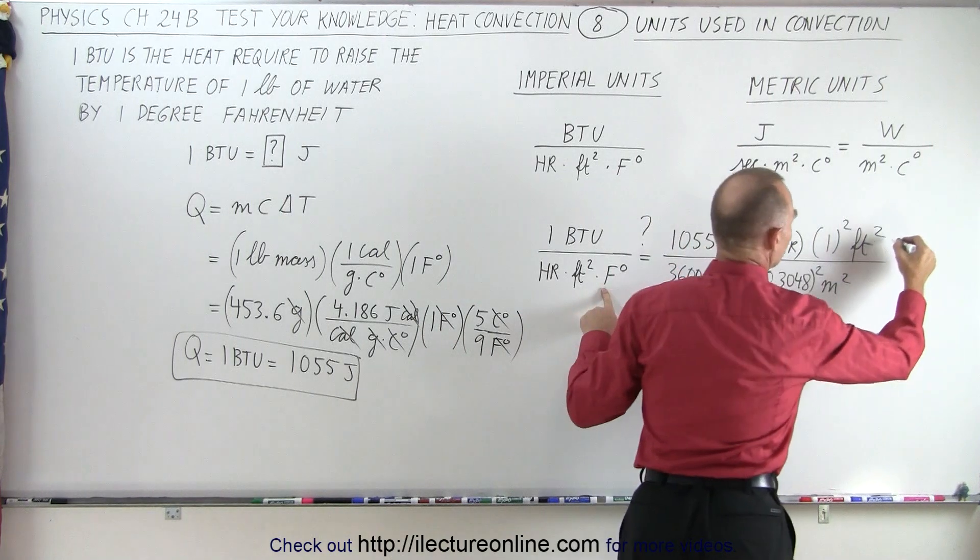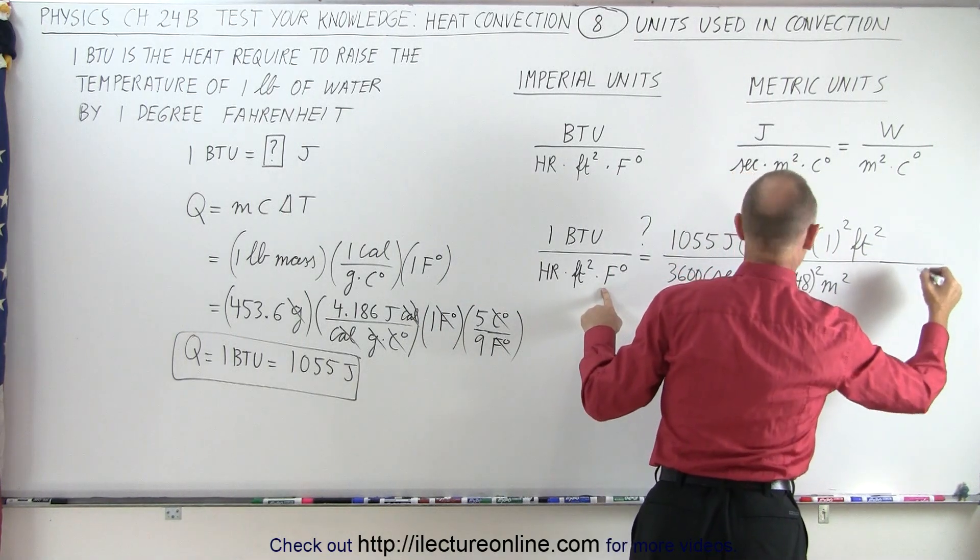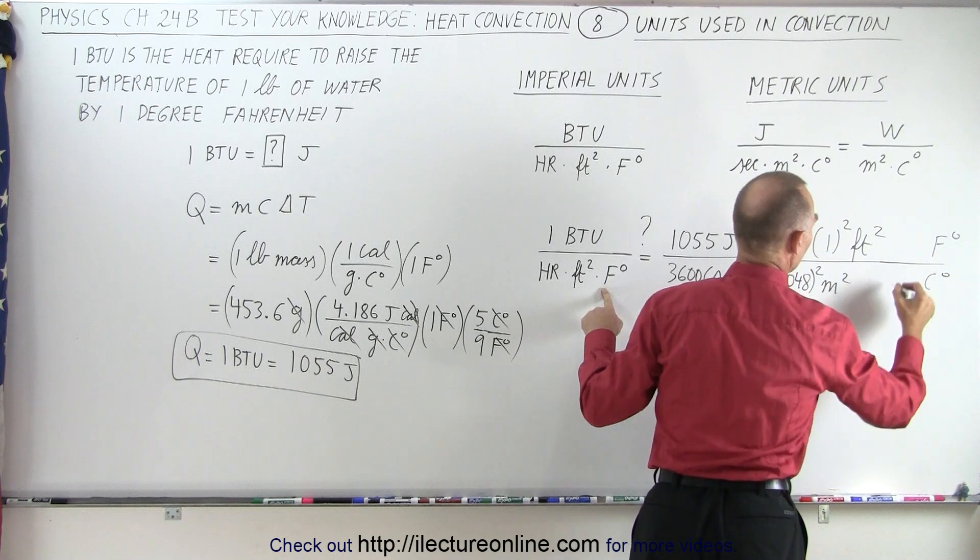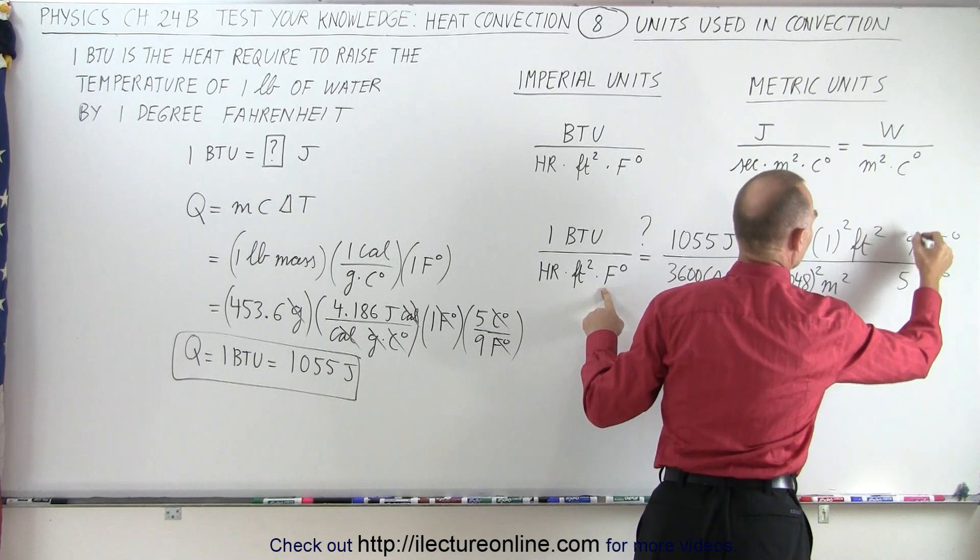And finally, Fahrenheit degrees to centigrade degrees. We need Fahrenheit degrees in the numerator, centigrade degrees in the denominator. Five of these is nine of those.